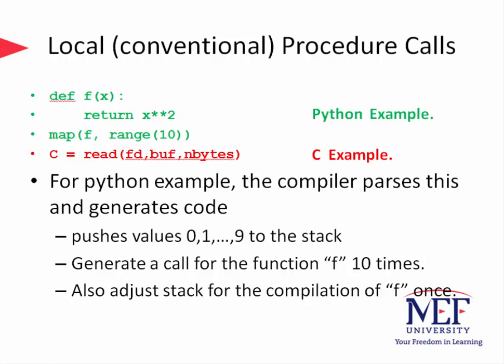Similarly, in the Python example shown in this slide, a process pushes values 0 through 9 to the stack and generates a call for the function f ten times. In C, parameters can be called by value or by reference. If it is by value, the called procedure can modify it and yet that will not change the value of that variable in the caller. A reference variable, on the other hand, is just an address — that's what is pushed to the stack — and once it is changed, it also changes the memory value and hence the variable itself.